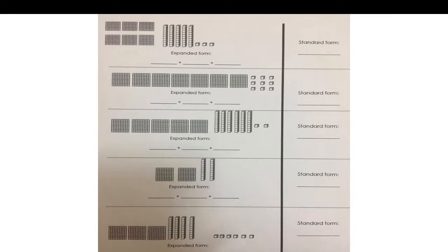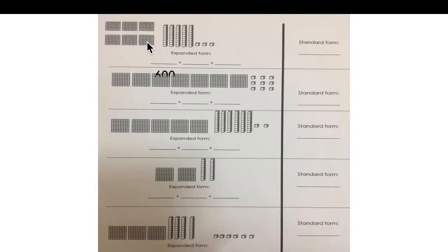And the last page — do the same thing: expanded form, then standard form. You can pause the video and do it alone, then start again to see the answers. Start with hundreds, then tens and ones. How many hundreds? Six. How many tens? 1, 2, 3, 4, 5. Five tens — fifty. How many ones? Three. Standard form: six hundred fifty-three.